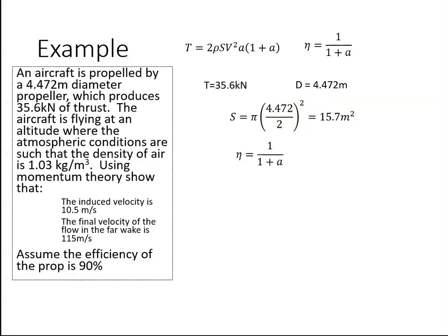The efficiency of the propeller is equal to 1 over 1 plus A and we were given the efficiency of the propeller. We were told to assume it. So it was assumed to be 90%. So I'm just going to rearrange that to get a value for A and instead of 90 we use 0.9 and that gives me a value of A of 0.11.